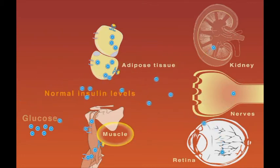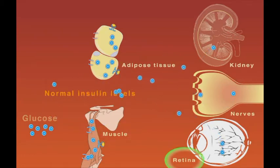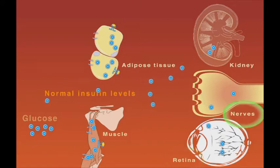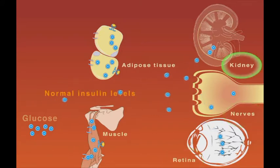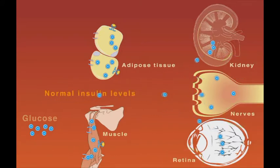On the other hand, the lenses, corneas, nerve cells, and the kidneys are examples of insulin-insensitive transportation.